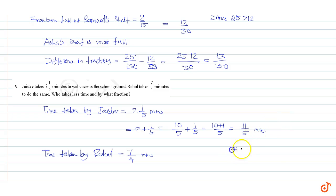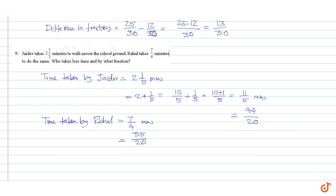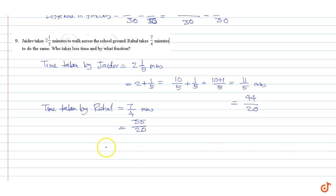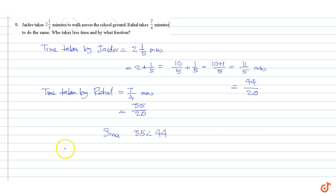Converting to like fractions, multiplying both sides by four we get 44 by 20, and this is equal to 35 by 20. Since 35 is less than 44, Rahul takes less time.